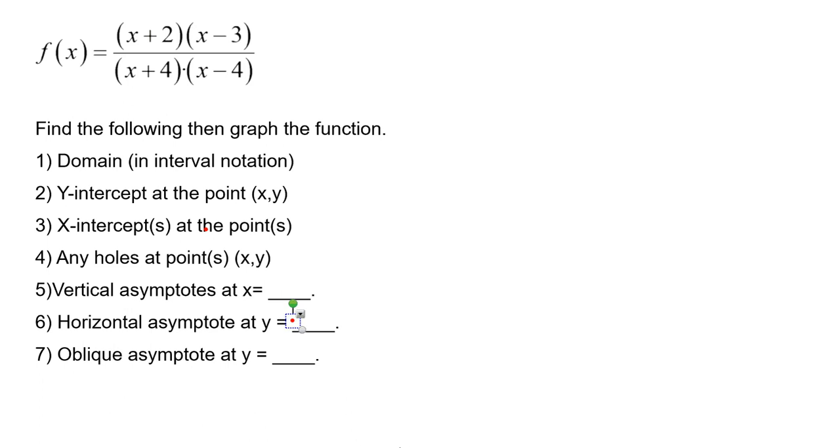This rational function is already in factored form. We have the quantity x plus 2 times x minus 3 in the numerator. And in the denominator, the polynomial in factored form is quantity x plus 4 times quantity x minus 4.